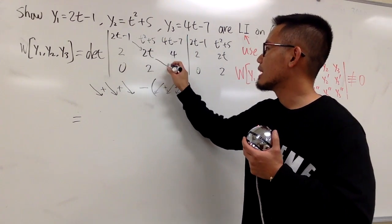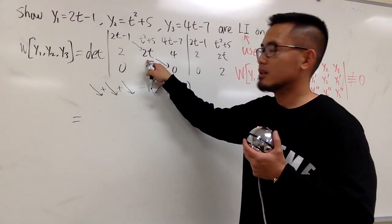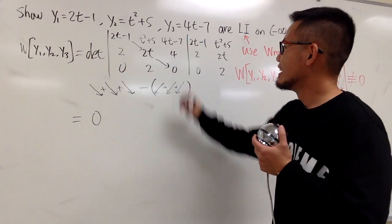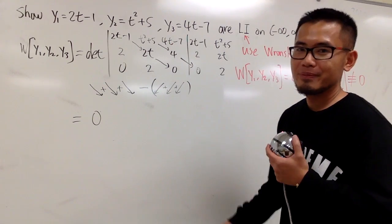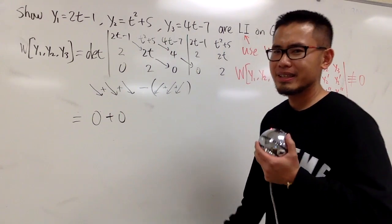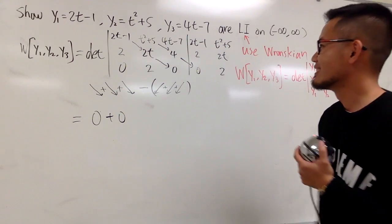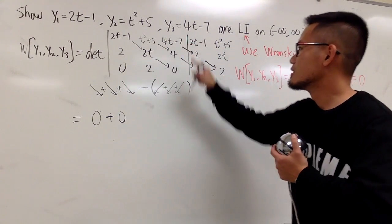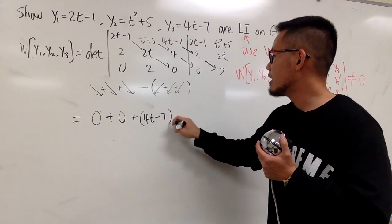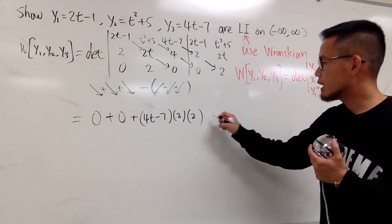So first of all, I will just do this times this times that. Well, 2t minus 1 times 2t and then times 0 is just 0. So the first arrow right here is just 0. Next, I will do this times this times that. Once again, this is this times this times 0, so it's still plus 0. It's kind of suspicious because I have a lot of 0, but just check this out. Next, I'll do this times this times that. So I will have to actually put down some work now. Parentheses: 4t minus 7 times this 2 times that 2.